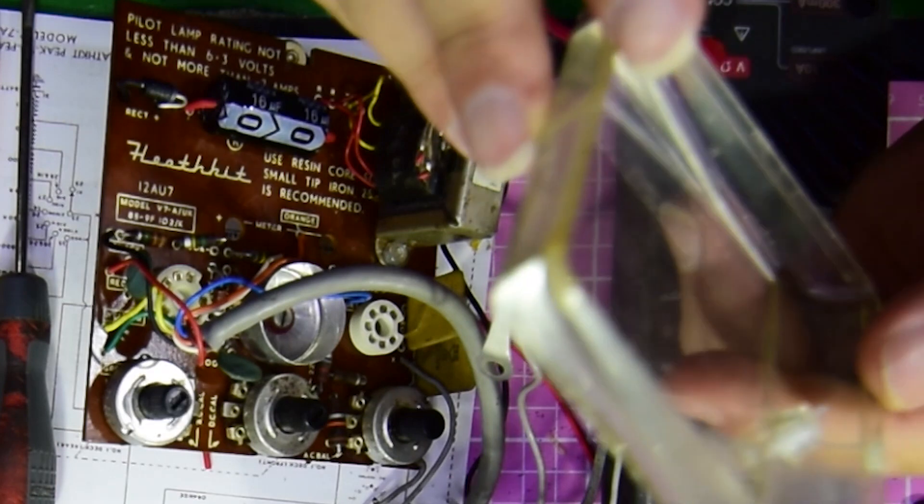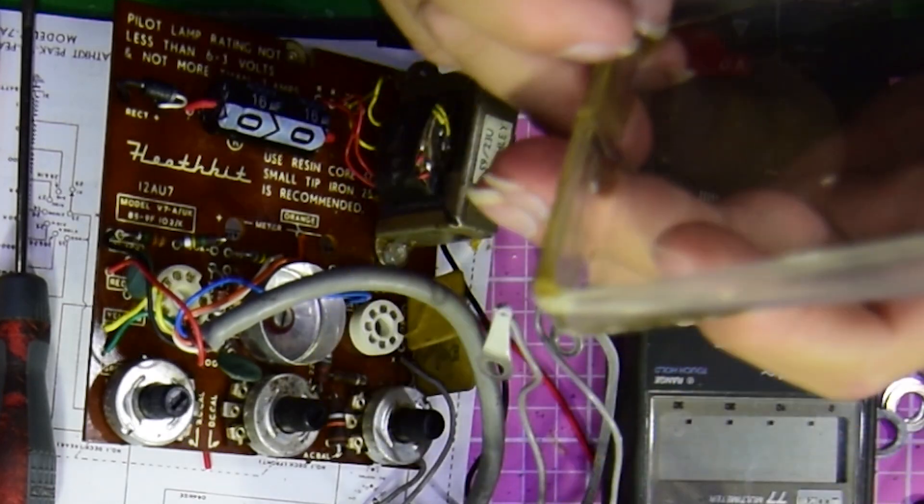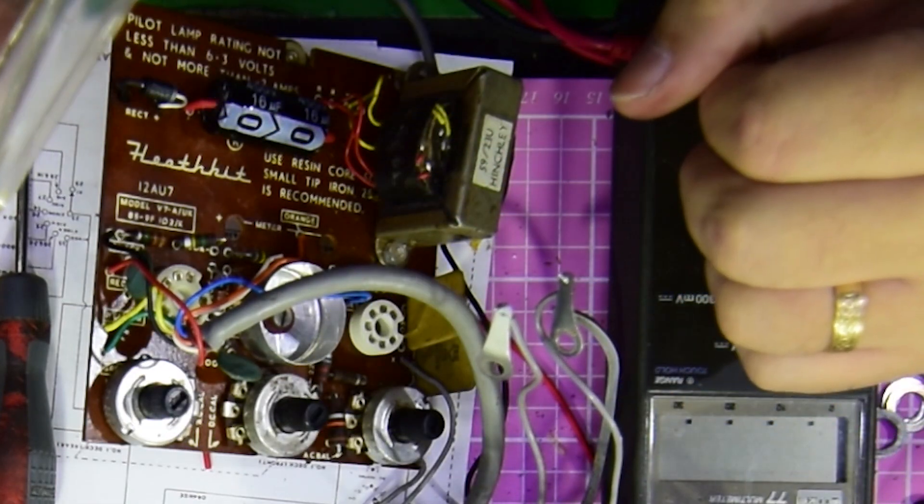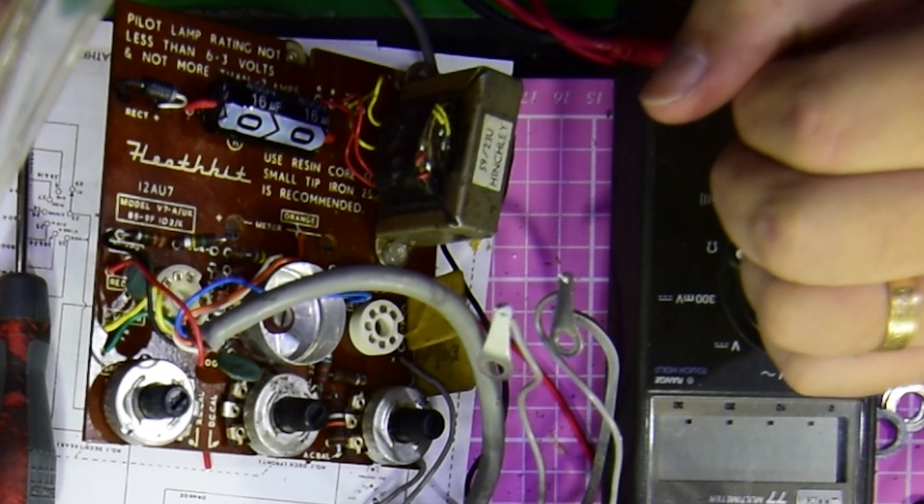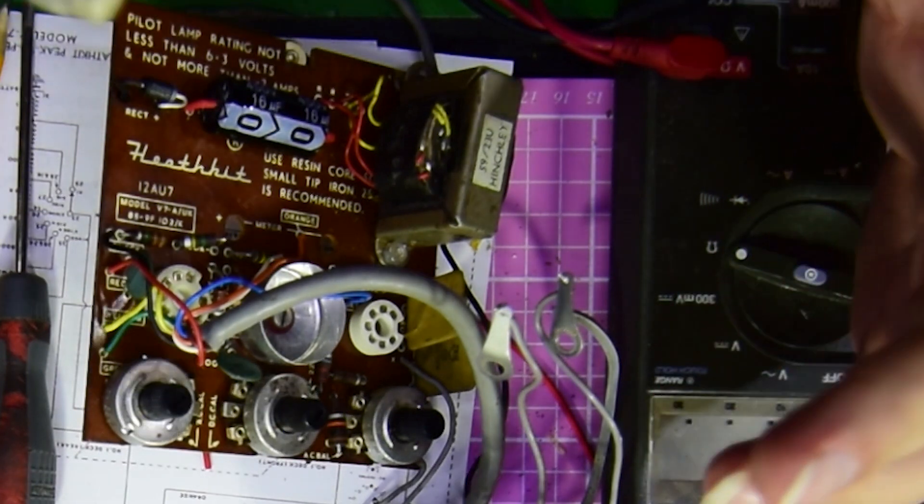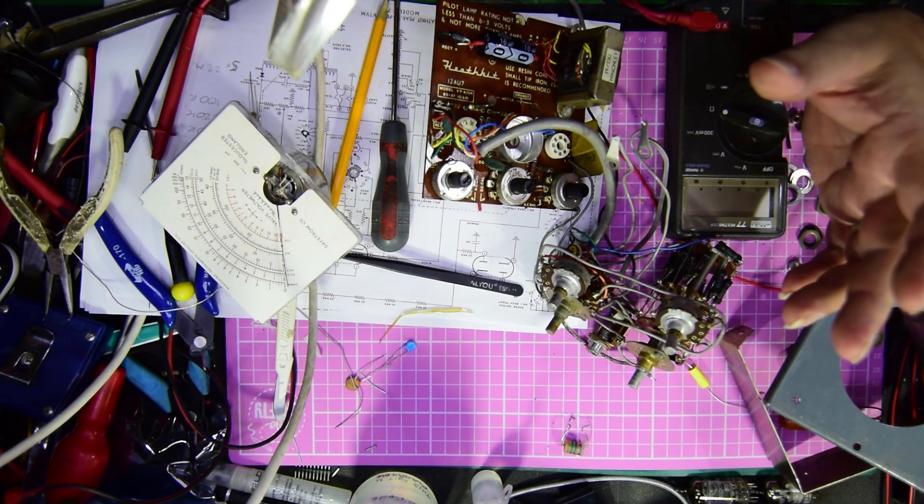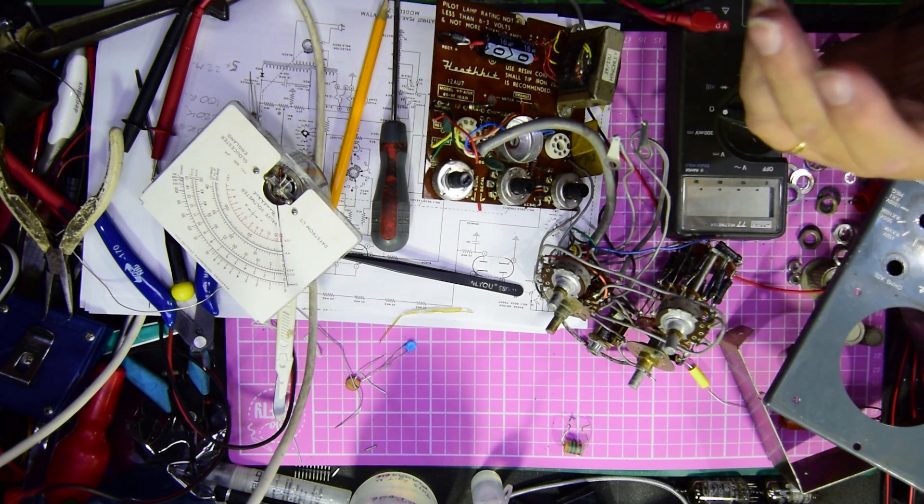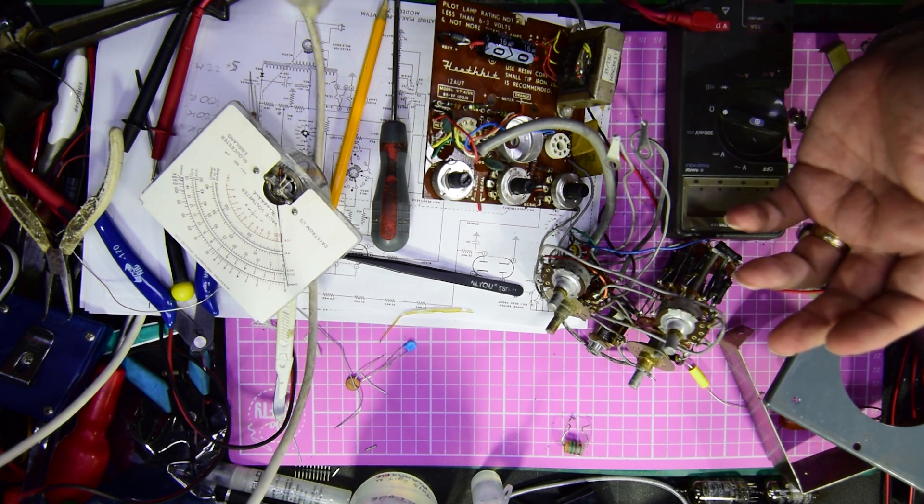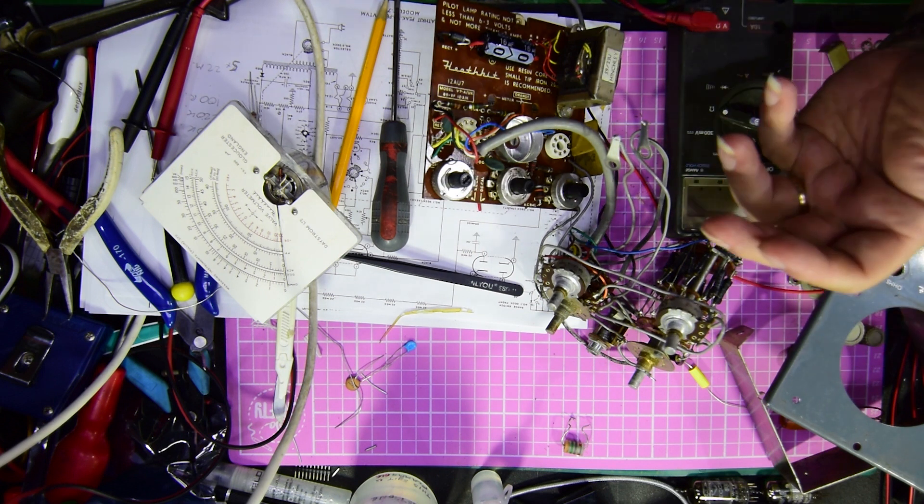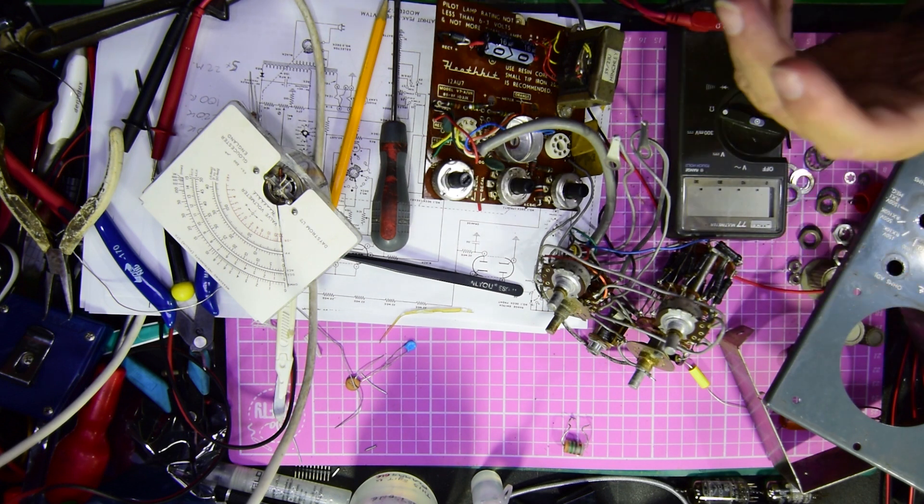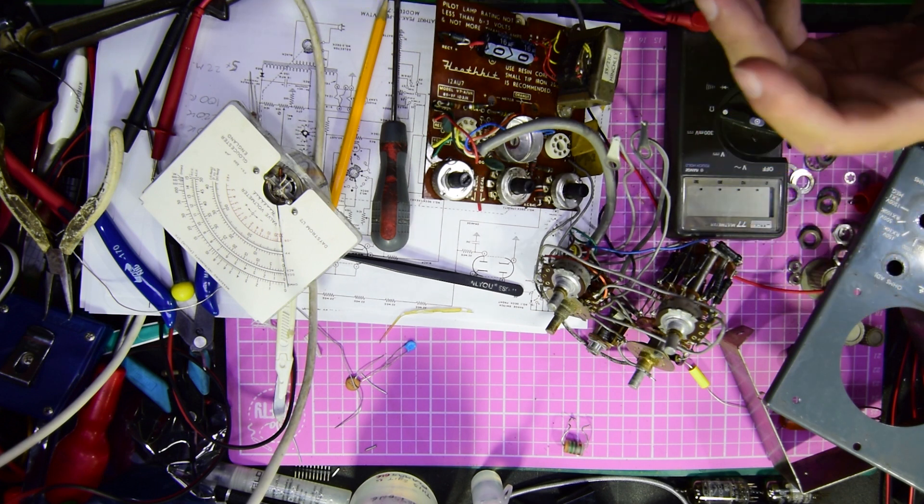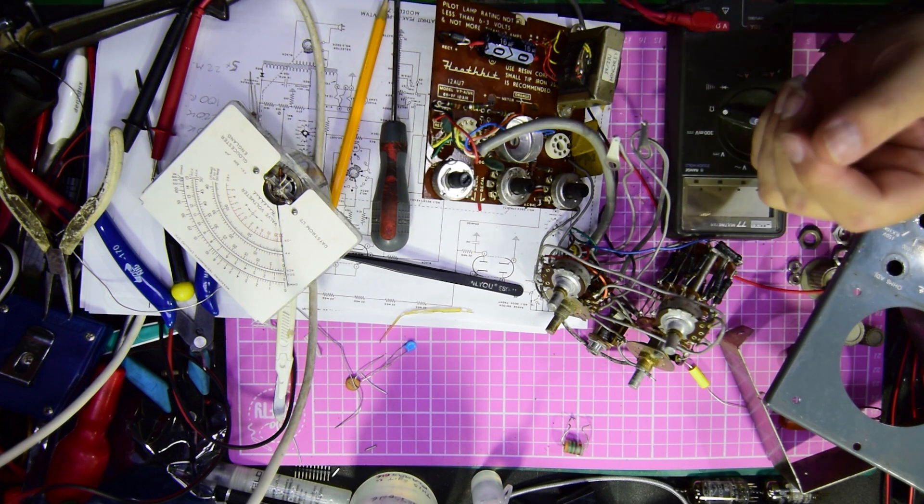I also checked the wire wound resistors and they're all absolutely fine. Let's leave it at that. When I come back with the next part you should see it pretty much ready to go back in the case and ready for an alignment. I might even just put it back in the case and then we'll go through the alignment.